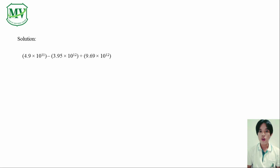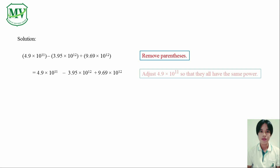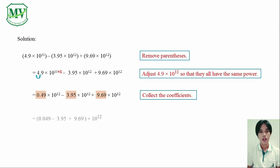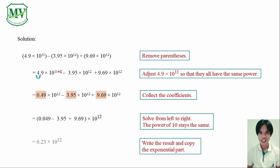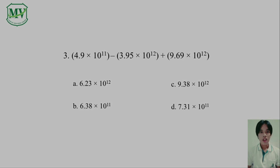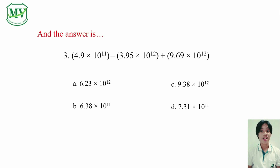Like before, remove all the parentheses. Adjust 4.9 x 10 raised to the power of 11 so that it will have the same power as the others. Now collect the coefficients, and then solve from left to right. The exponential part stays the same. 6.23 x 10 raised to the power of 12 is our final answer. And that is letter A.